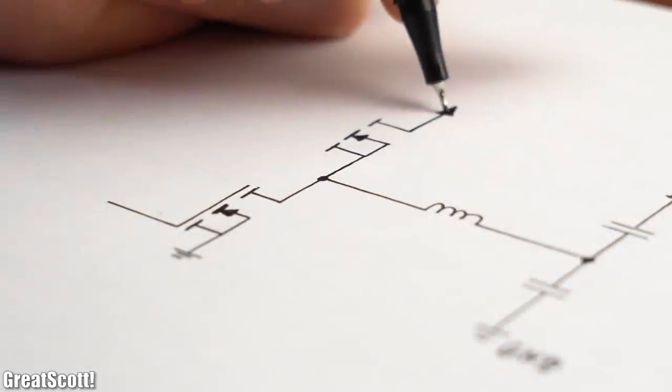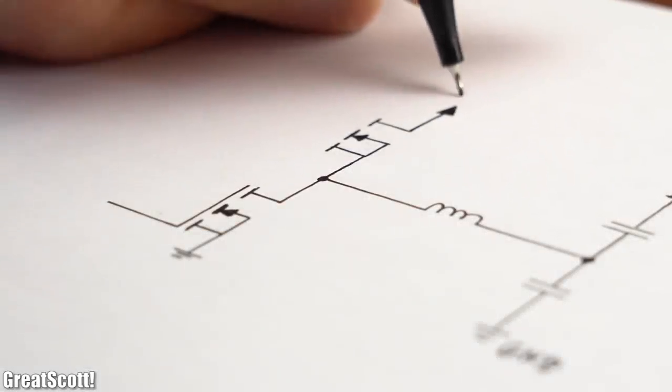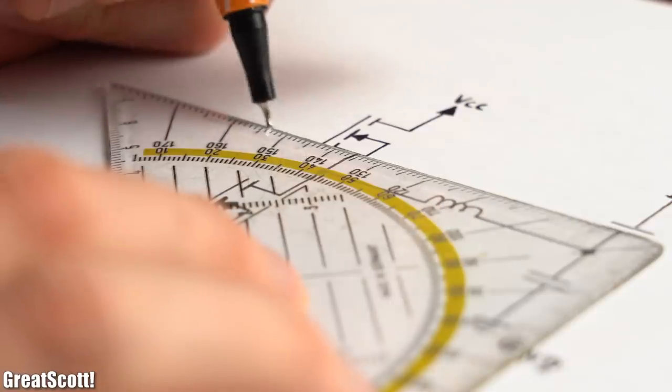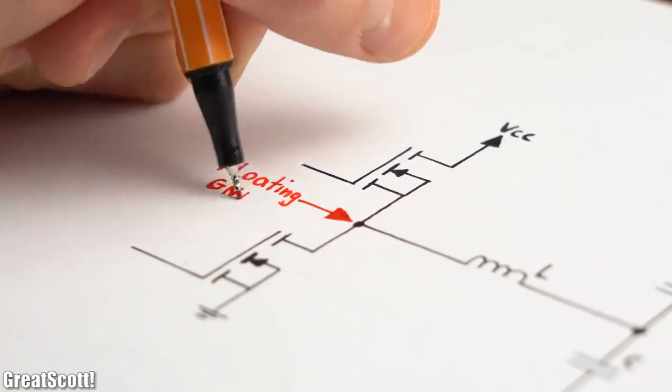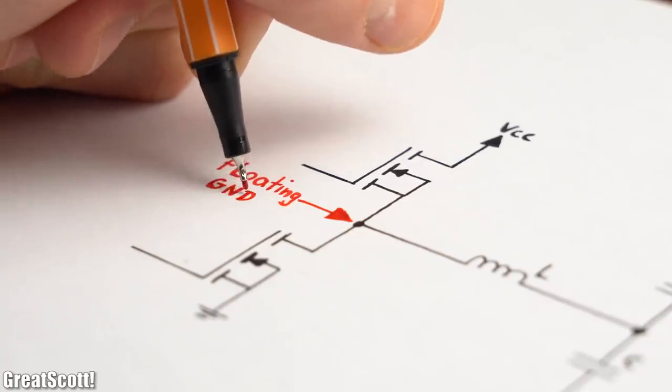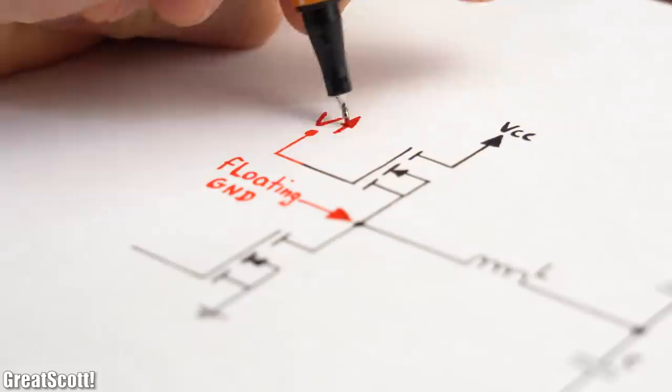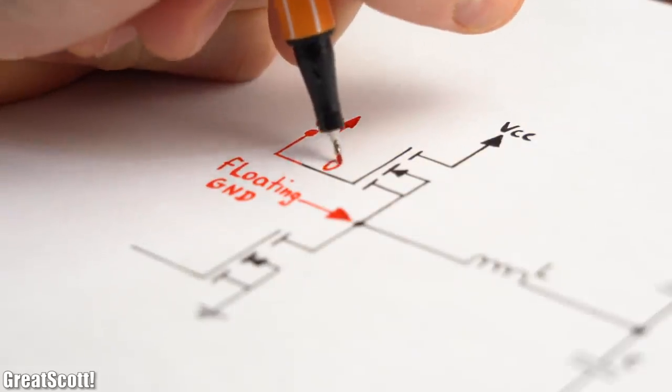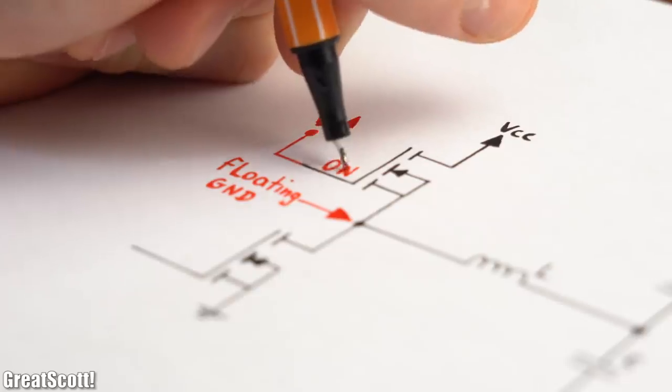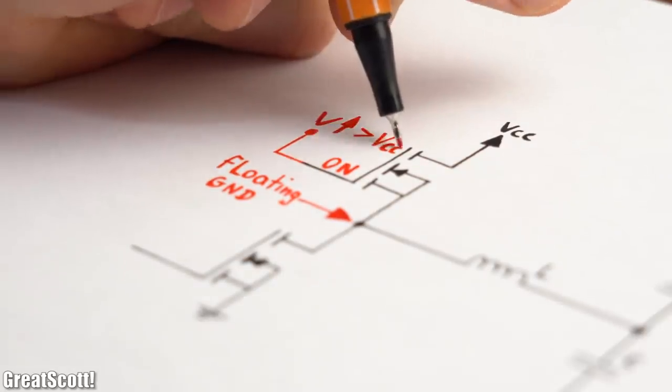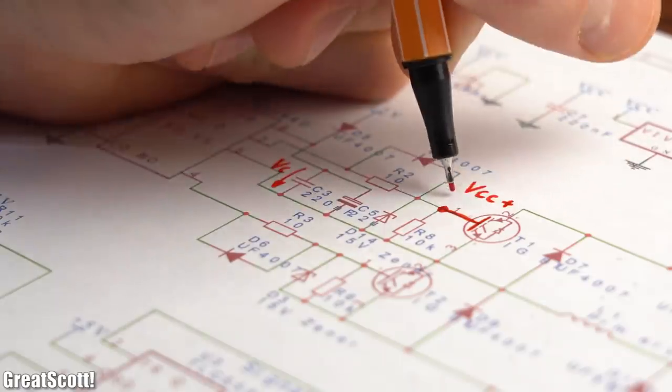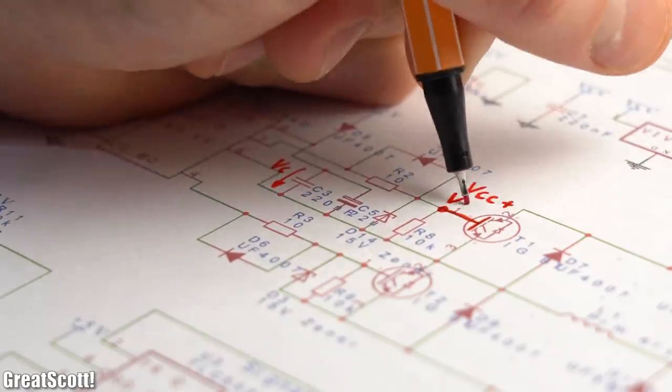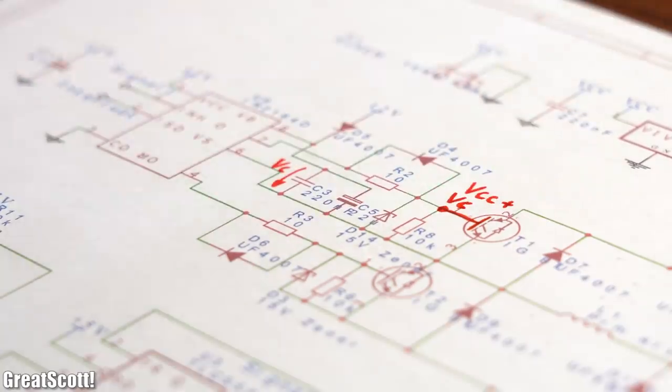I already talked about the problem of high side switching and N channel MOSFETs in a half bridge during part 1 of this video series. But as a refresher we can say that due to the floating ground of the upper MOSFETs we require a higher voltage at the gate in order to completely switch it on which is most of the time above the supply voltage. That is why we use the principle of bootstrapping in order to create such a higher voltage.